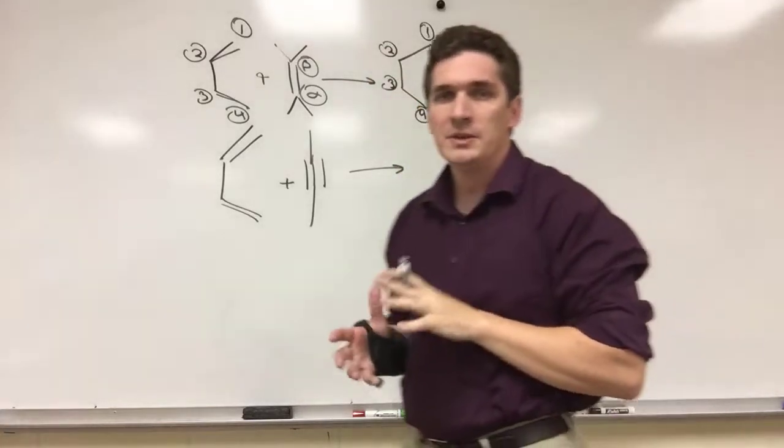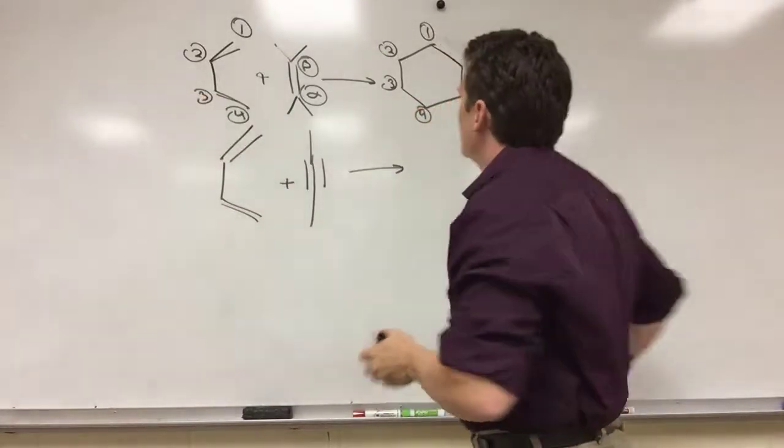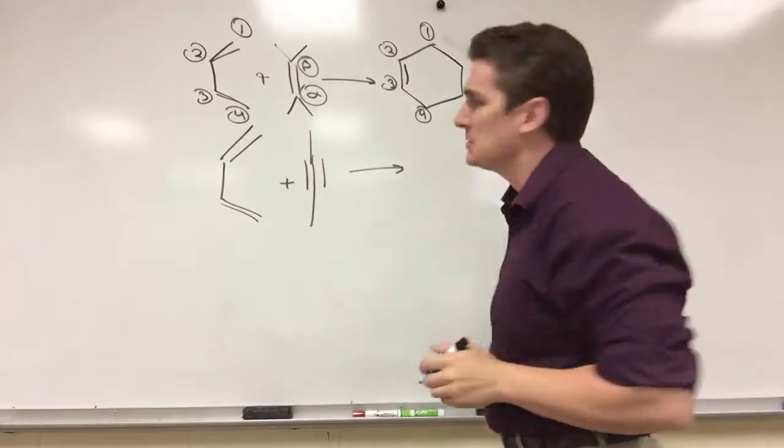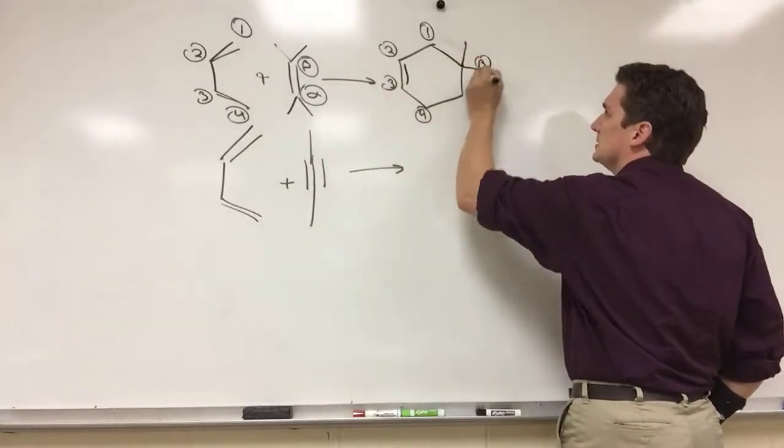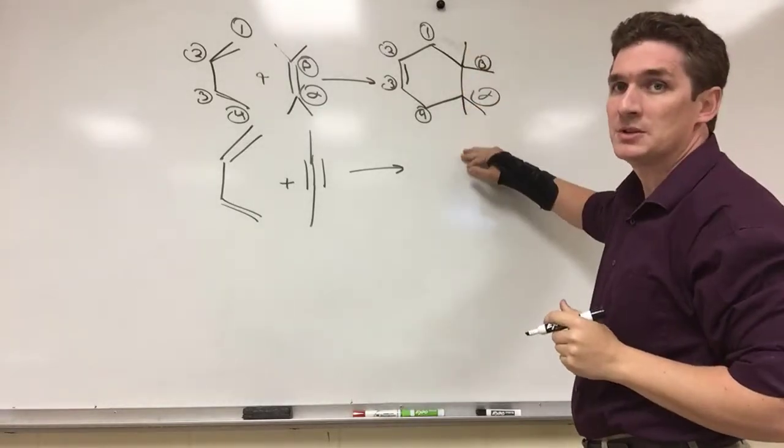Now always, always when we did Diels-Alder with alkene, we always ended up with a double bond between the second and third carb. And then we use these positions to figure out where everything else was going to go. So since alpha and beta come from our parent double bond, we end up getting the four methyl groups here on this carb.